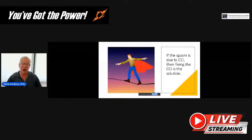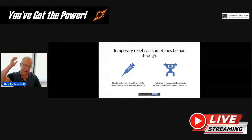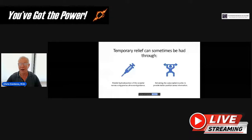If this is being caused by spasm, then fixing the CCI or the instability is the solution — the instability leads these muscles to spasm, which then leads to all these other problems. So the most elegant way to fix this is to fix the instability. Obviously, you can also treat these secondary problems — things like platelet lysate hydrodissection of the occipital nerves under ultrasound guidance to help occipital neuralgia. You can also retrain the suboccipital muscles to try to provide better position sense information, done with neurologic things like moving the eyes while moving the neck. Those don't necessarily treat the primary problem, which is usually instability, but they can help.